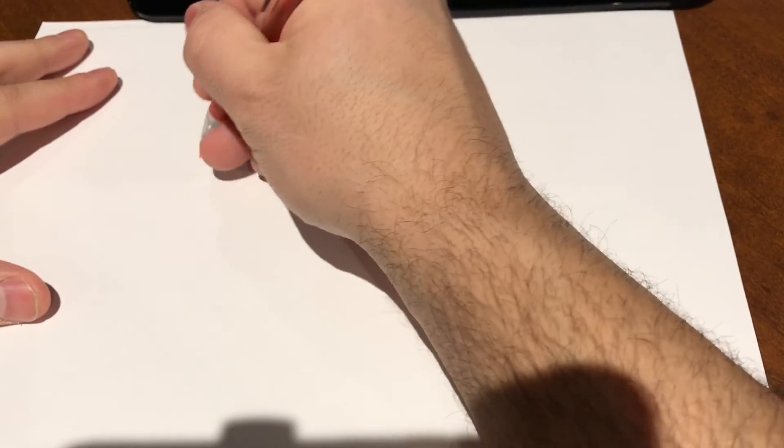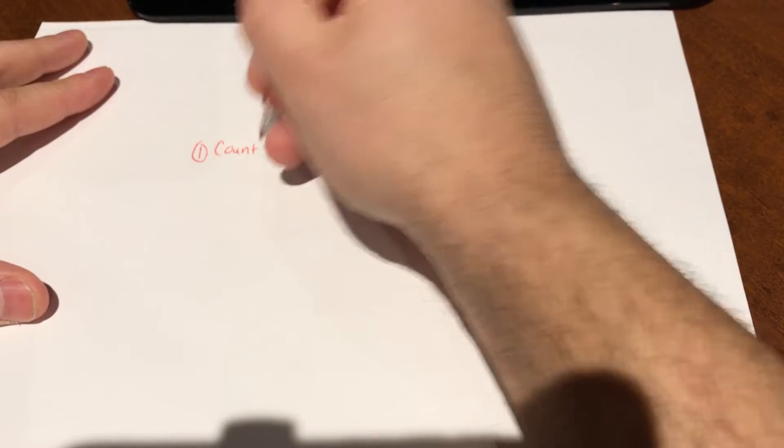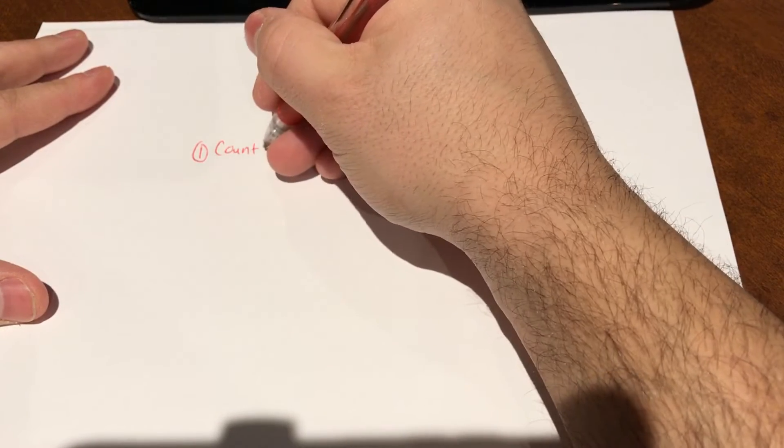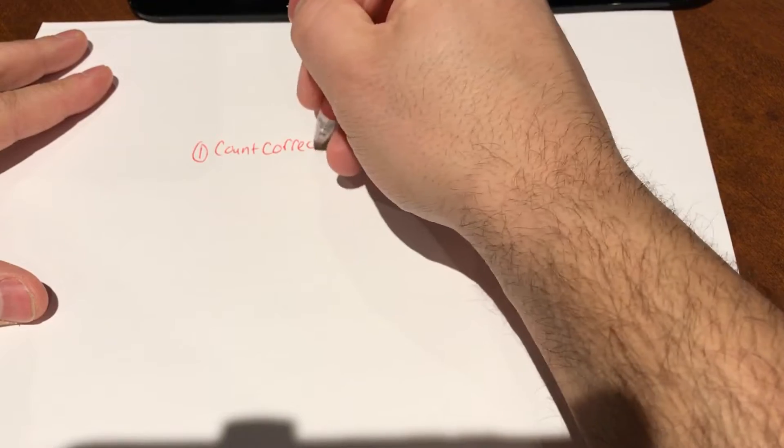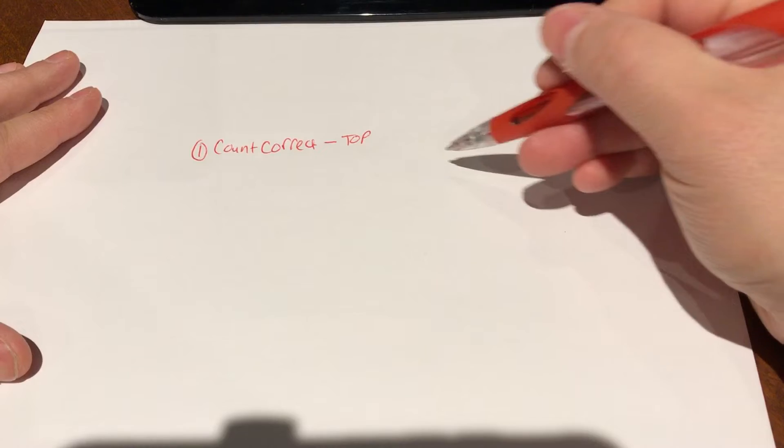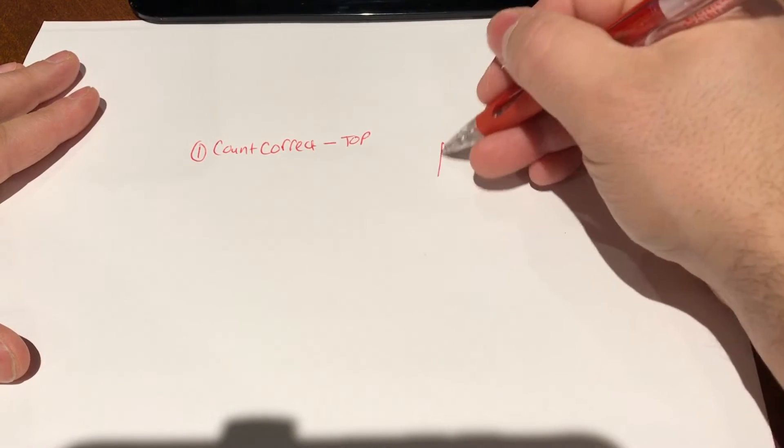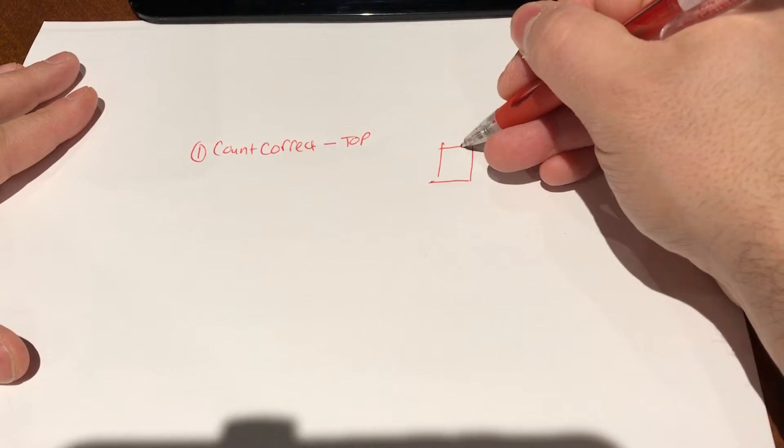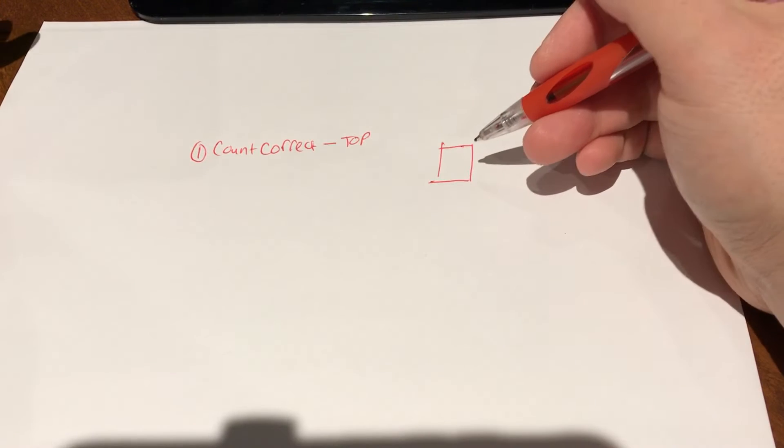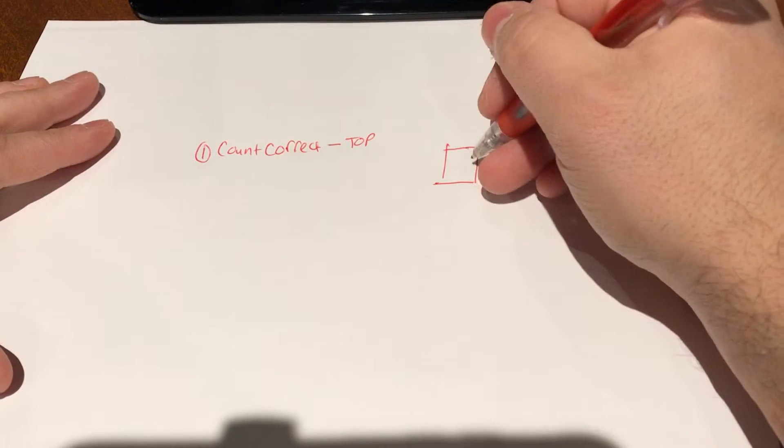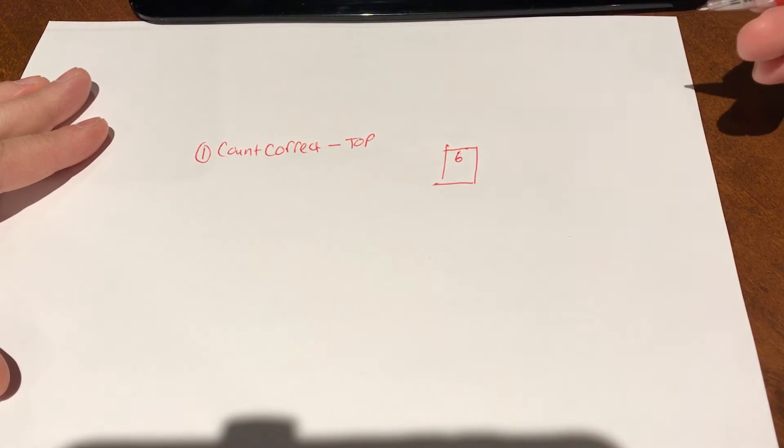Step number one is you want to count all of the correct marks that you got on the test, and you're going to write that number down on the top of a little box that we're going to make over here. So here's the box. You're going to count all of the correct answers. Let's say that I got six correct answers on the test.